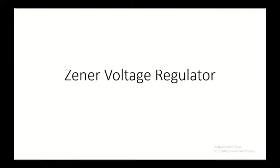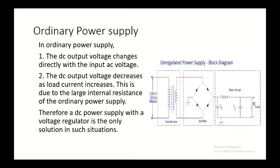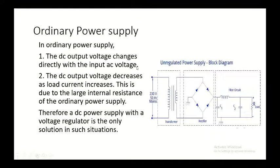Good morning students. We will be talking about the Zener voltage regulator today. As we have studied in our earlier class about the ordinary power supply, we know that the ordinary power supply consists of an input of 230V AC, a step-down transformer, a rectifier, and a filter circuit. In an ordinary power supply the output voltage changes directly with the input AC voltage, so whenever there is a change in the input voltage of 230V there will be a corresponding change in the output voltage.